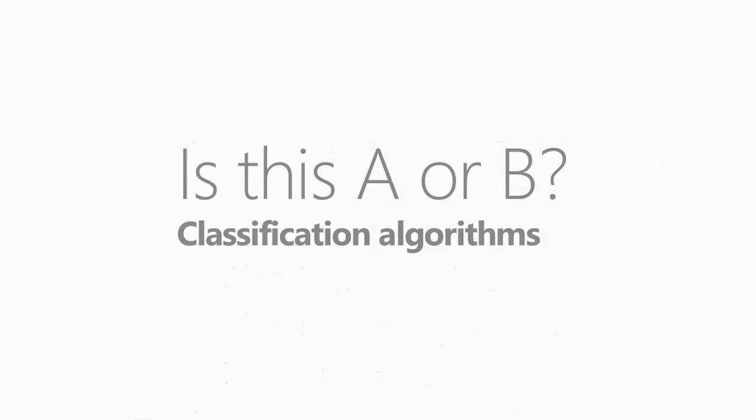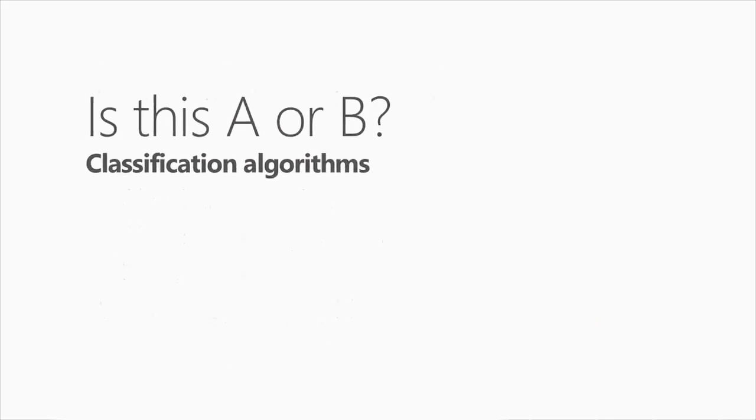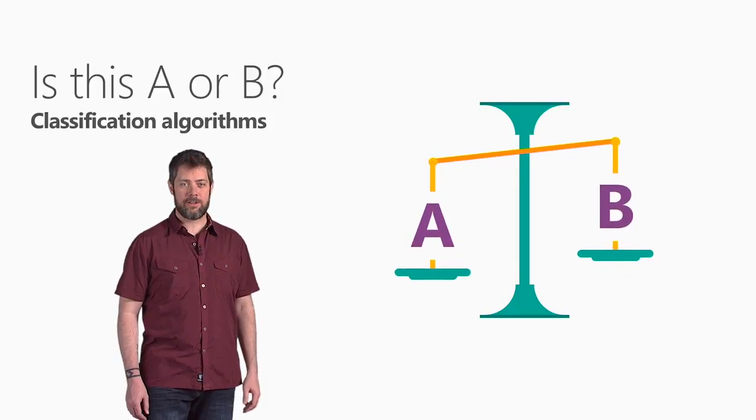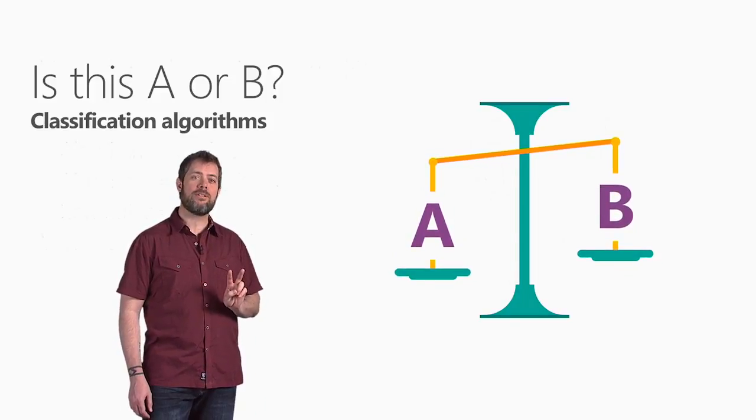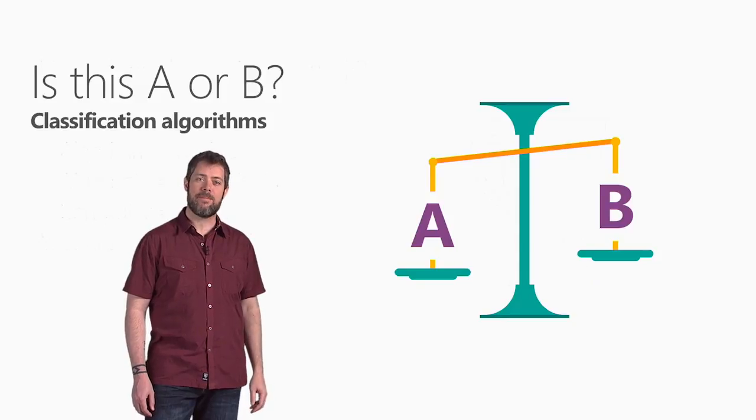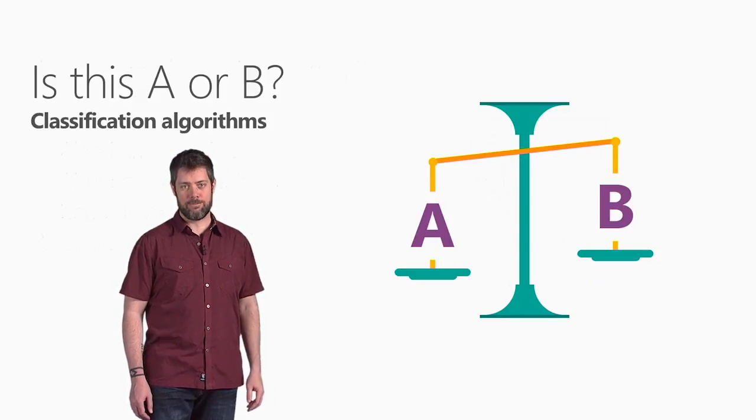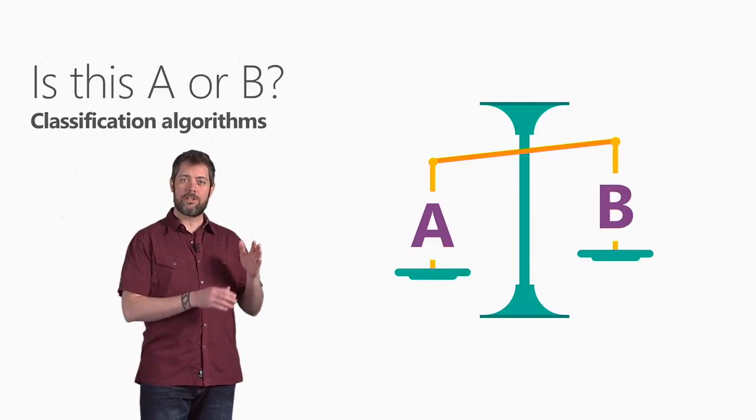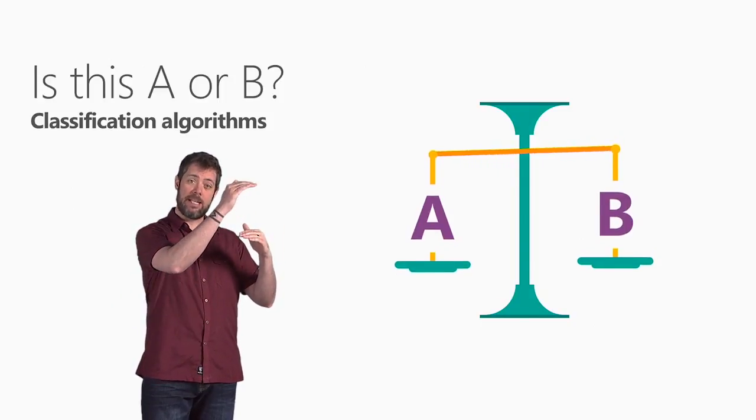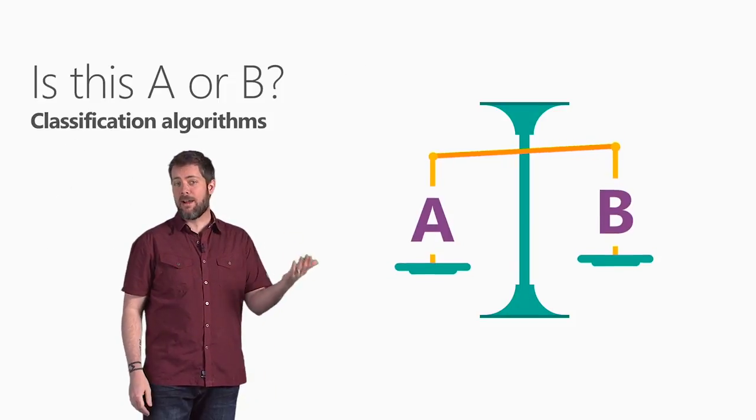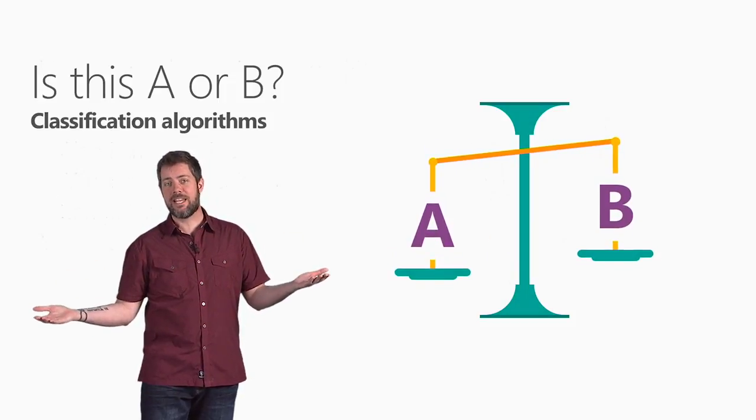So let's start with a question, is this A or B? This family of algorithms is called classification, and when there's only two choices, it's two-class classification. It's useful for any question that has just a couple answers. For example, will this tire fail in the next 1,000 miles? Yes or no? Which brings in more customers, a $5 coupon or a 25% discount?